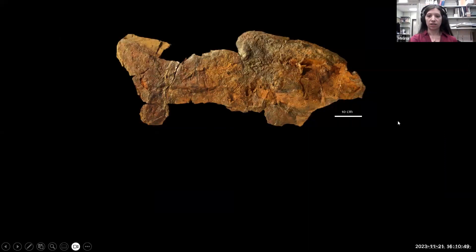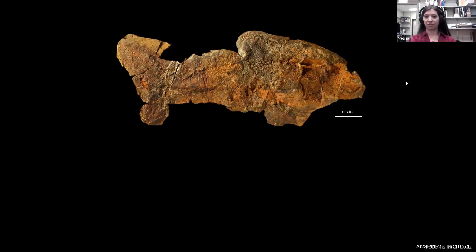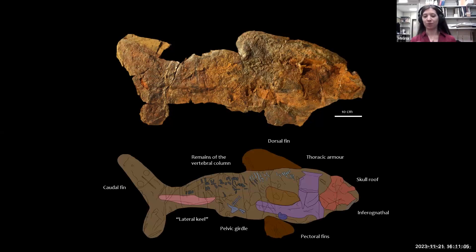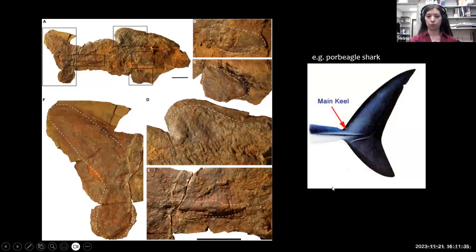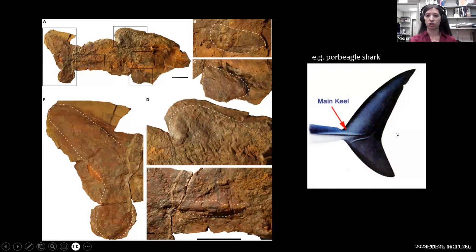What's very interesting about this specimen — the holotype — is that at first glance it looks like a blob, but when you take a closer look you see very interesting features. You can see the imprint of the skull roof and the thoracic armor, but also traces of the pelvic fin, the outline of the pectoral fins, dorsal fin, and caudal fin — pretty much the body outline. There are also remains of the vertebral column, and a weird structure we interpreted as homologous to a lateral keel, which you can see in some modern fish and sharks.